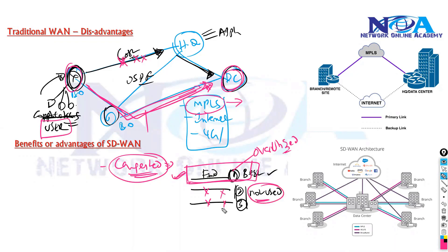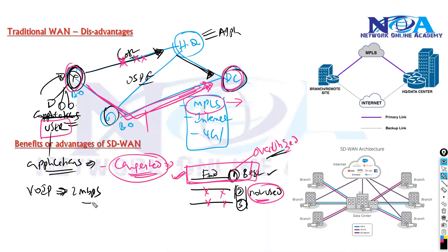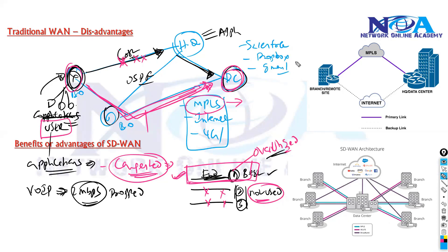If applications don't get enough bandwidth — for example, a VoIP application requiring 2 Mbps of bandwidth — packets may get dropped. Also, most applications used today, like Salesforce, Dropbox, or Gmail, are cloud-based, software-as-a-service applications.